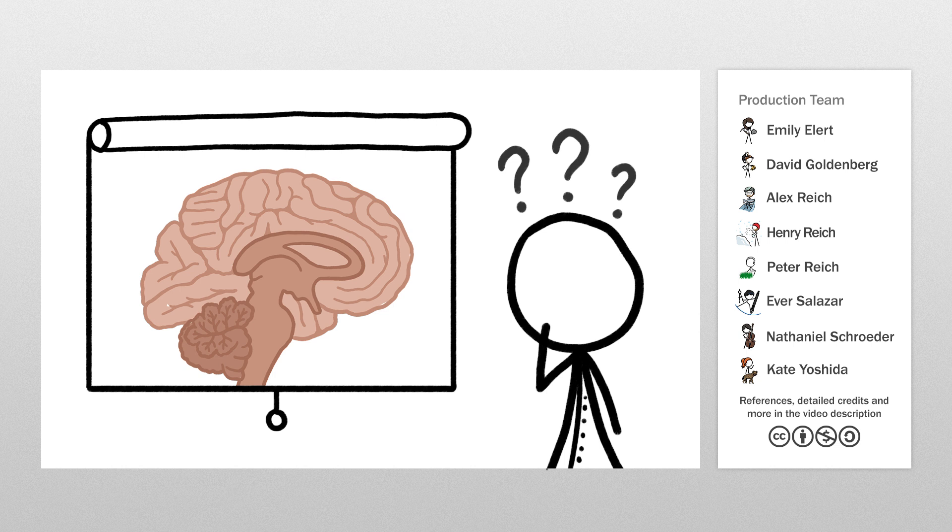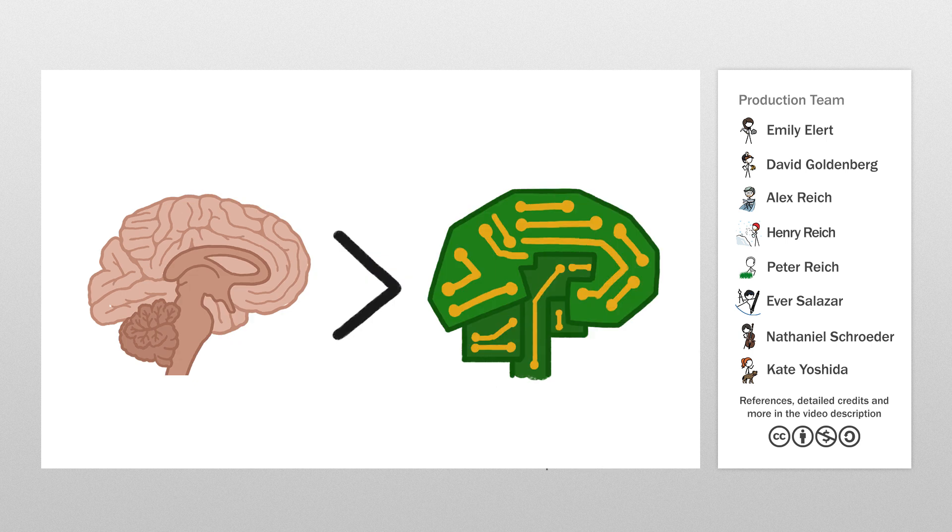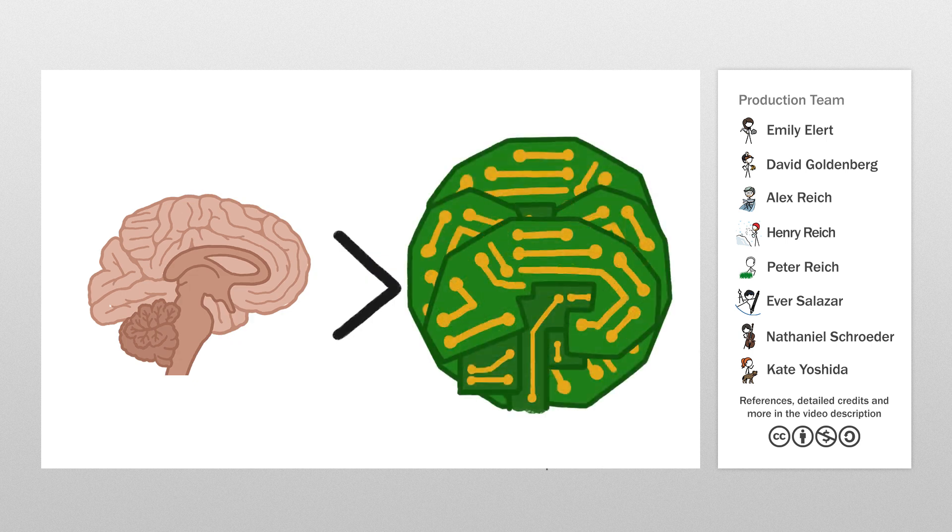Brains are complicated. And while it might be frustrating to scientists that we haven't been able to build artificial brain circuits, it also means that humans aren't completely replaceable, yet. But as smart machines get smarter, they're going to replace more and more of our jobs.